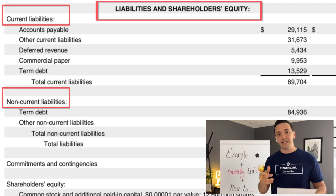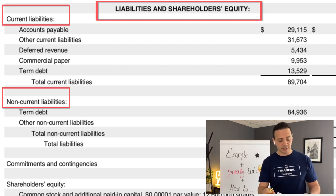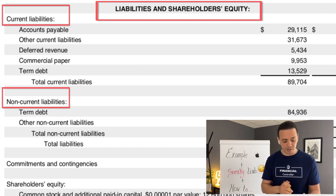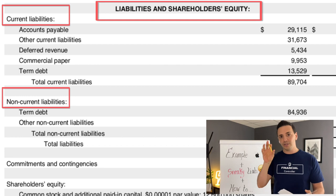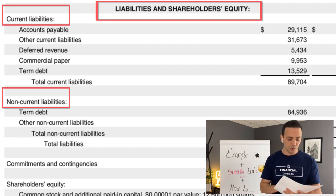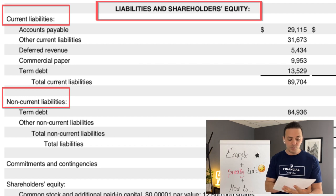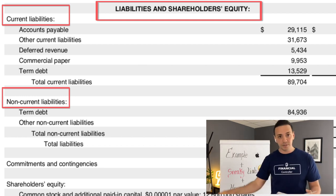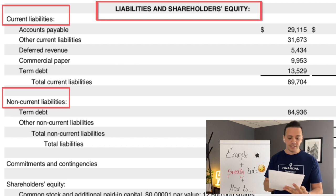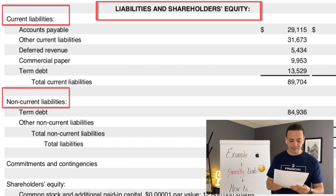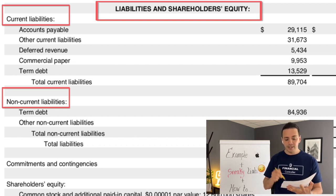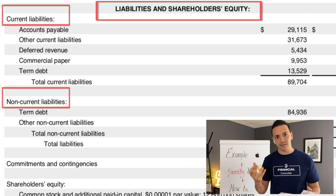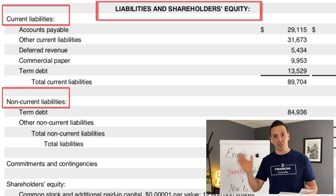And then you have term debt — basically a loan from a lender. The reason it sits in current liabilities is because this is likely the portion of the loan due within 12 months. On the non-current side, you'd also see term debt, but that portion is due beyond 12 months. Total liabilities and equity will always equal total assets because what you own — assets — always equals what you owe — liabilities plus shareholders' equity.